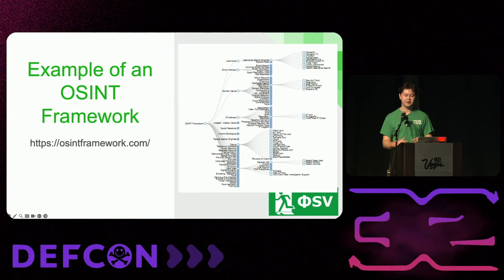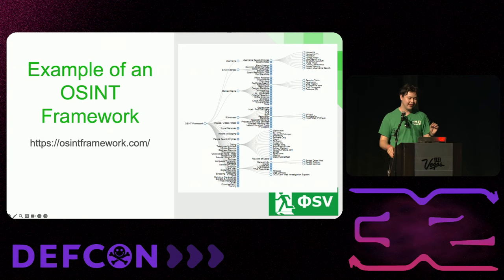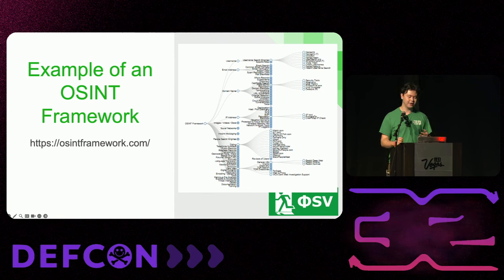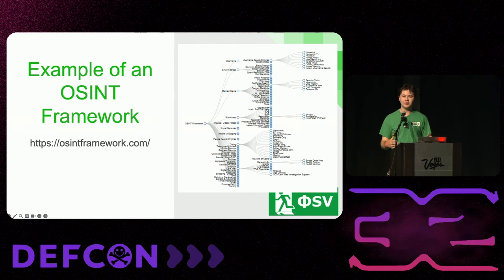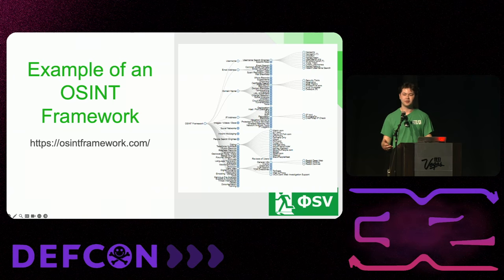A lot of OSINT investigators love frameworks. This framework has little blue dots — each one represents a different type of information you want to get, whether it's email addresses, usernames, or what languages you see on screen. You click on that blue dot and it points you toward the tool you need. A lot of people use their own frameworks and create their own routines for each investigation, but this is a great way to find the tools you gravitate towards.